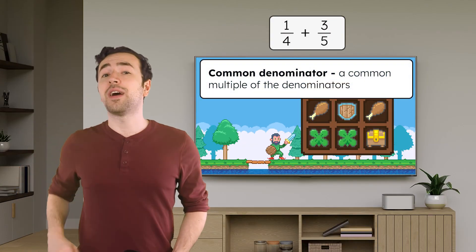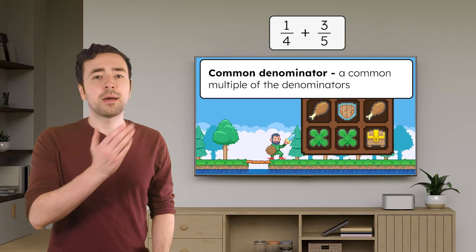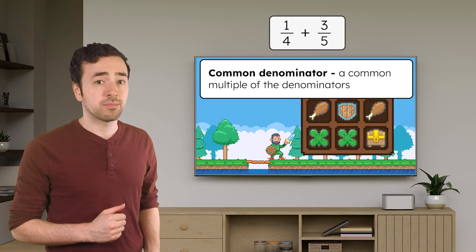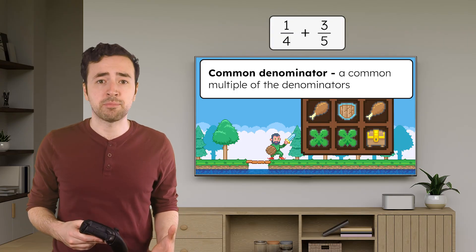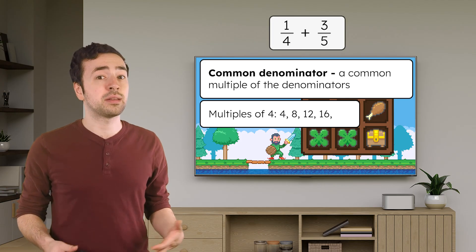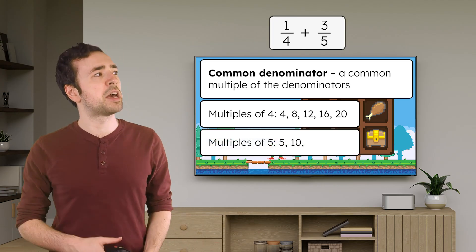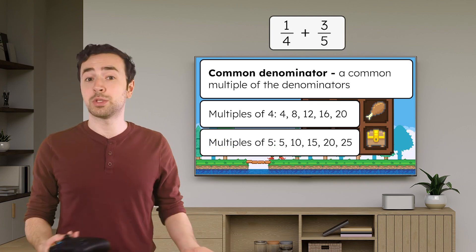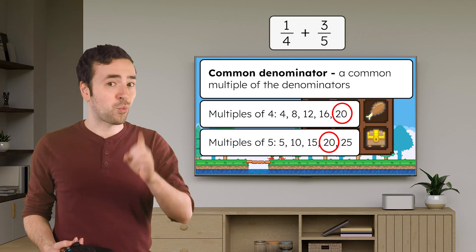We need to find a common denominator, or a common multiple, that both denominators share. We can do this by listing multiples of each to find out which ones they have in common. Some multiples of four are four, eight, twelve, sixteen, and twenty. Some multiples of five are five, ten, fifteen, twenty, and twenty-five. What do they have in common? Twenty.